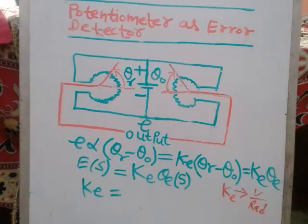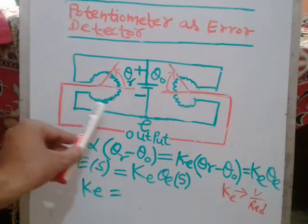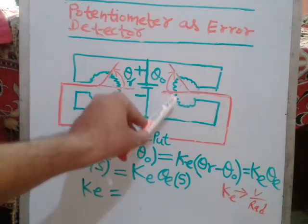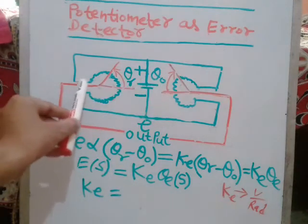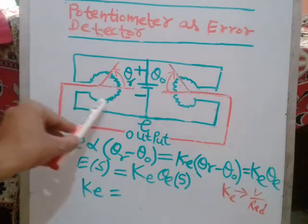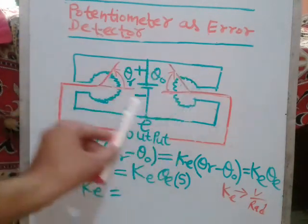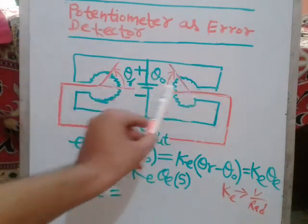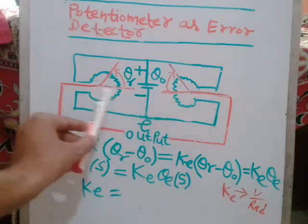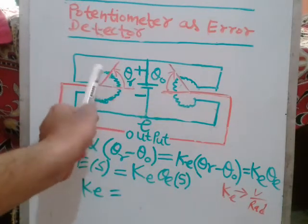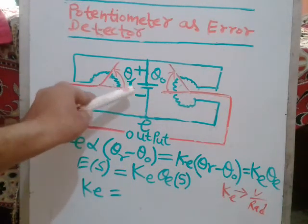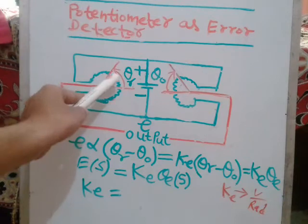Hello students, welcome to this YouTube channel. Today we will discuss the potentiometer as an error detector. Here you can see the rotary potentiometer — it is in circular form. There is a knob, and you rotate the knob to observe the angular positions.